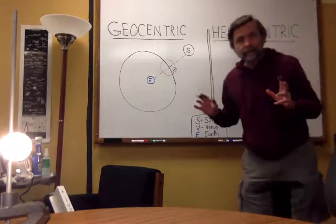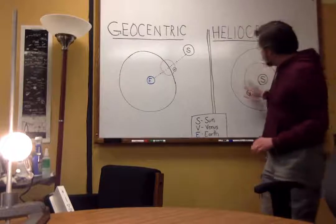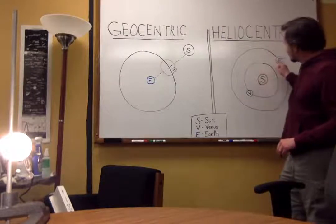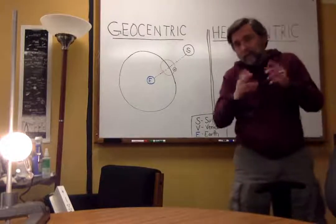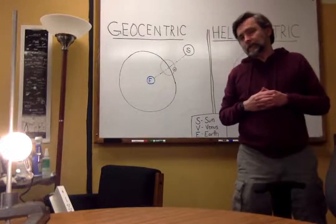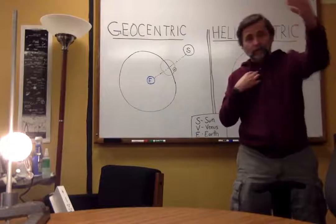How can we tell the difference? Well, the key is, when you observe something that's between you and the Sun, it always appears as a crescent. Remember that the Moon is a crescent when it's between the Earth and the Sun.